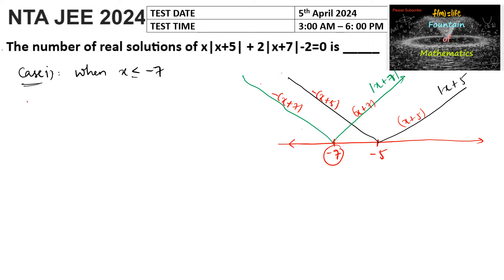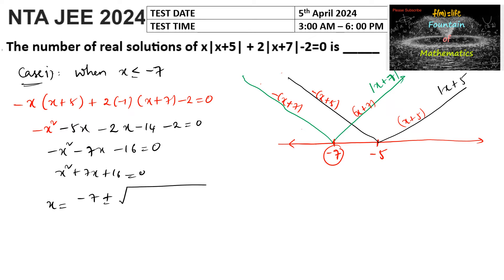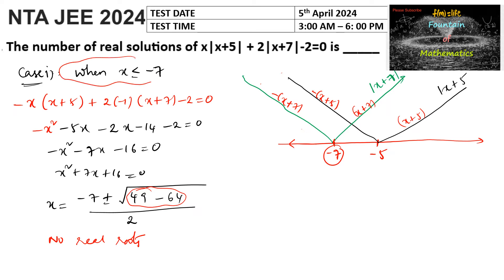So we write the expression as x times negative of x plus 5, plus 2 times negative of x plus 7, minus 2 equals 0. Simplifying: minus x squared minus 5x minus 2x minus 14 minus 2 equals 0, giving minus x squared minus 7x minus 16 equals 0, or x squared plus 7x plus 16 equals 0. The discriminant is 49 minus 64, which is negative, so there are no real roots when x is less than negative 7.